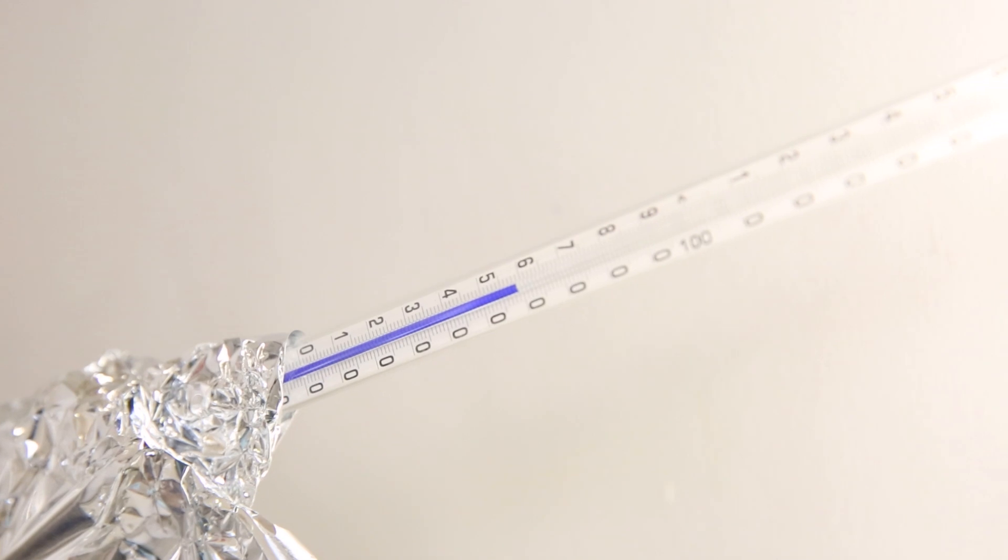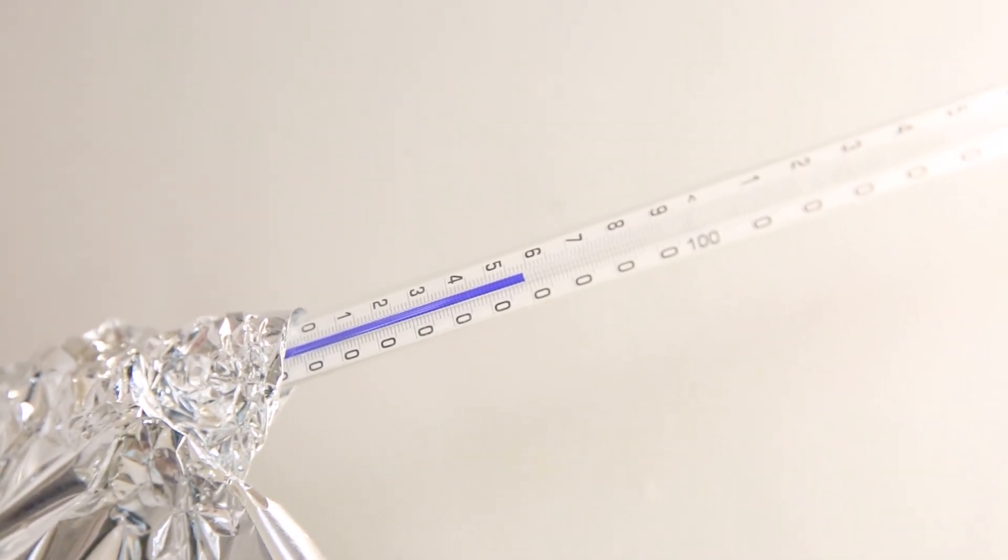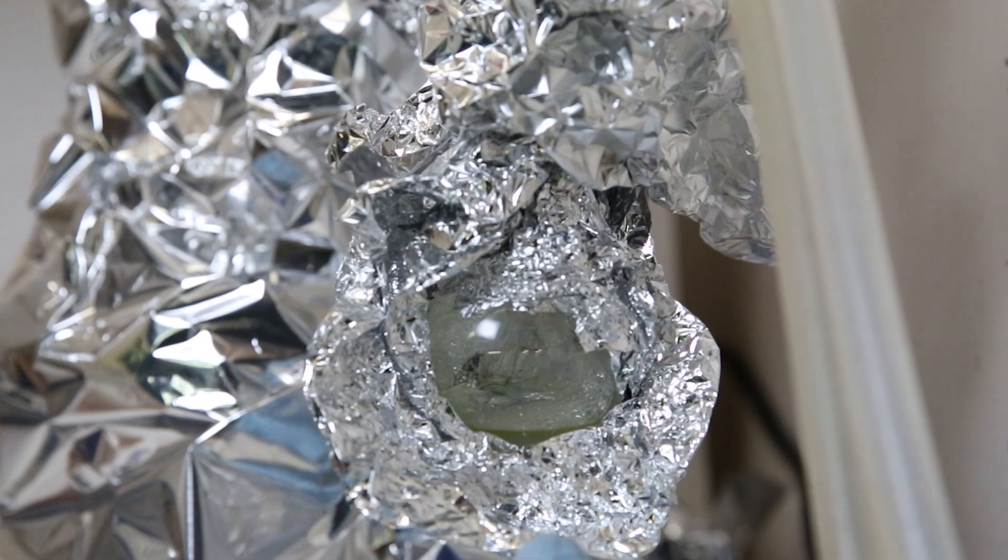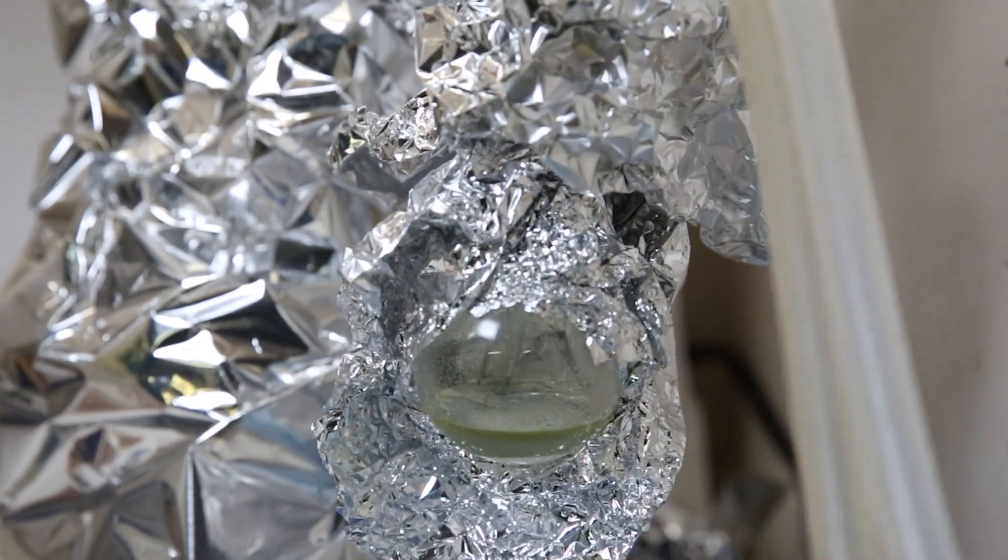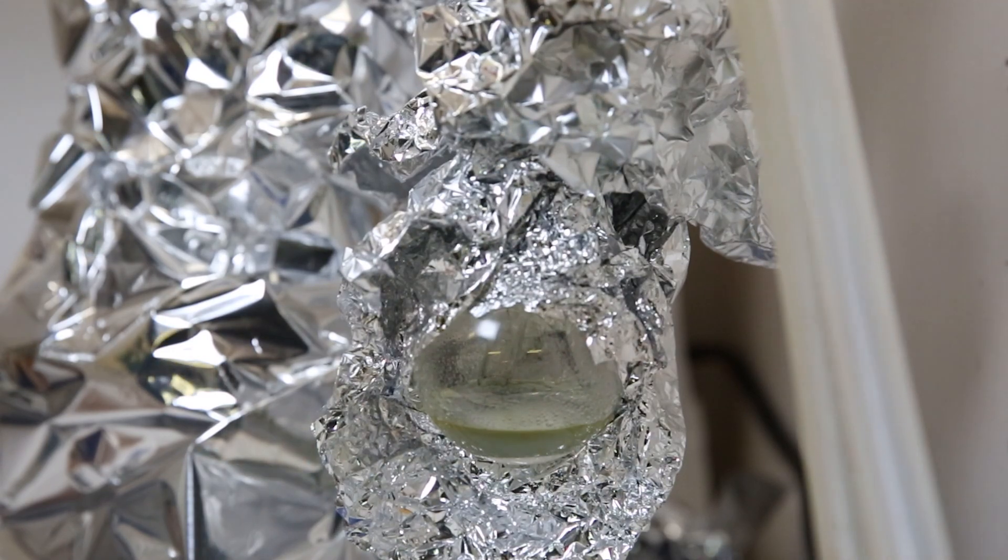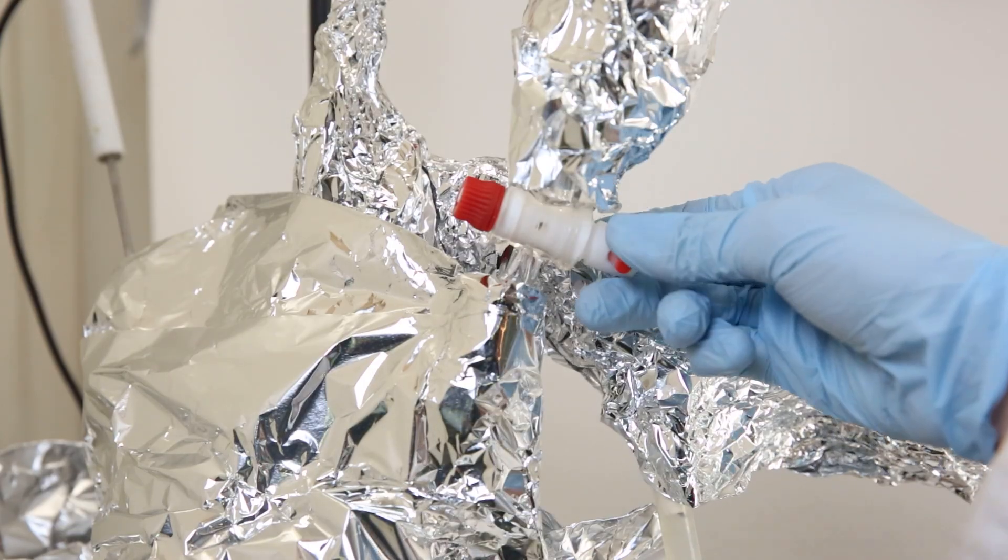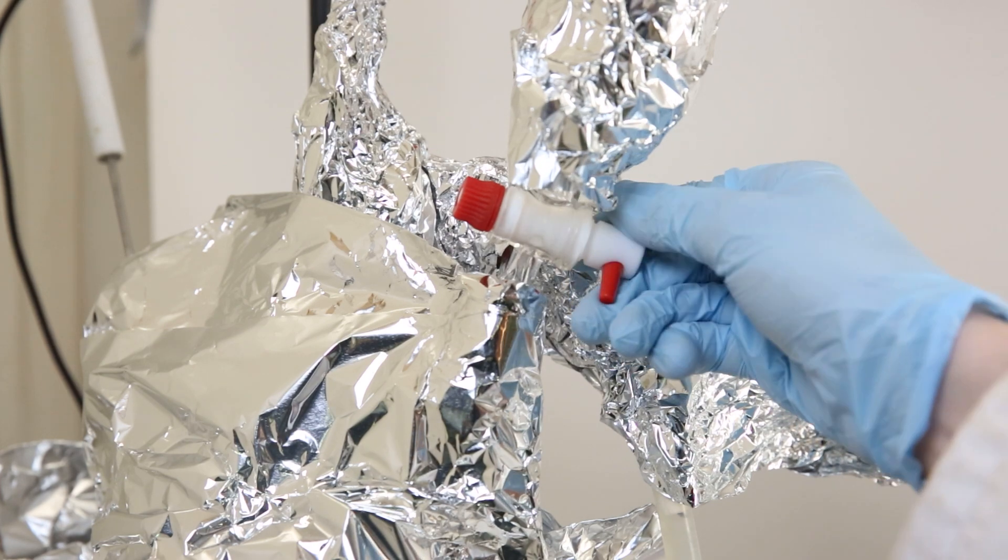A little while later, the thermometer in the short pass started to read around the boiling point of Acrolein. So I check the flask and we can see liquid has already started coming over. Knowing that we are now receiving liquid in our second receiving flask, I can start opening the addition funnel and let the glycerol slowly drip in.